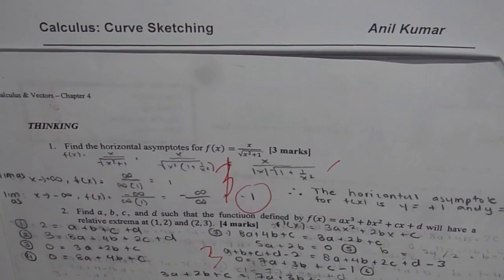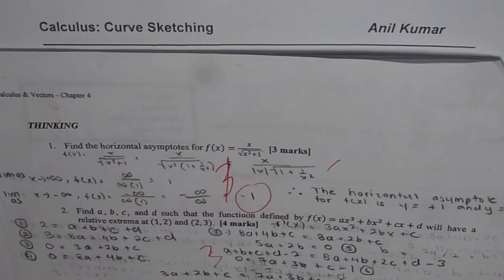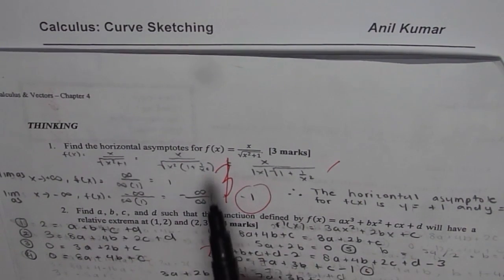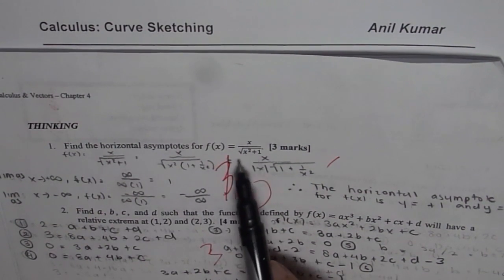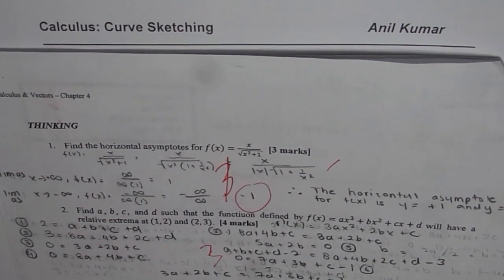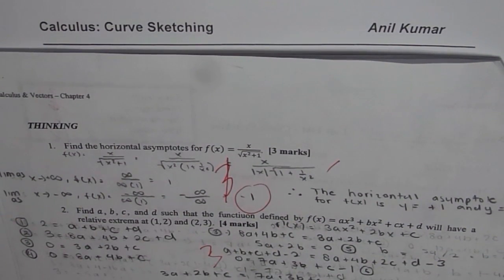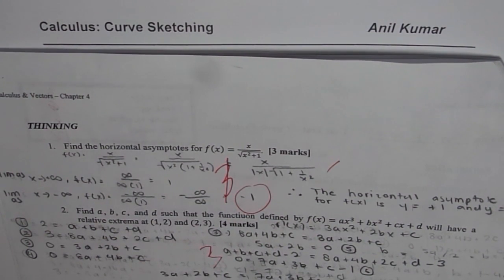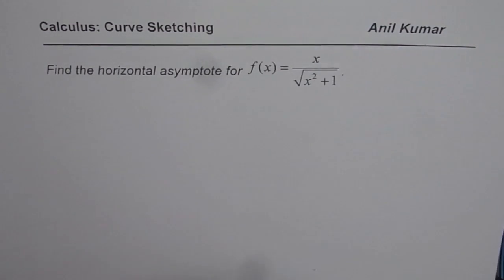I'm Madhul Kumar and here is my favorite question from the test paper. We need to find horizontal asymptotes for the function f(x) = x over square root of x squared plus 1. This is a thinking question, and at times I have also seen this as a bonus question in test papers. Let us look into the details of how to solve such a question.